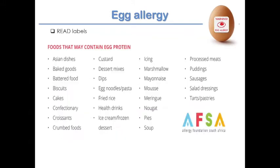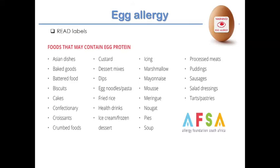From the Allergy Foundation of South Africa's website, there is a helpful list of terms to look out for when reading product labels. Hidden egg is found in unexpected products like sweets — patients with egg allergy can react to marshmallows. Families must be educated to read labels and look for hidden forms. Processed meats are a very common source, as egg is used as a binder in sausages and burgers.